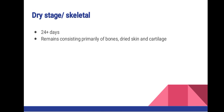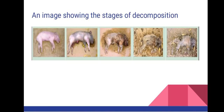Here we have an image of the stages of decomposition. You can see the first one represents the fresh stage and the second one is the bloated stage. You can clearly see the skin color changes. Also, you can see at the openings it is wet — the soil around the openings is wet — and it is also bloated.